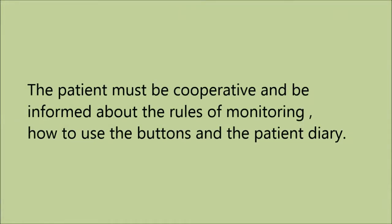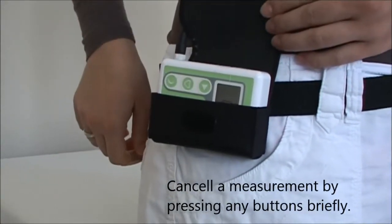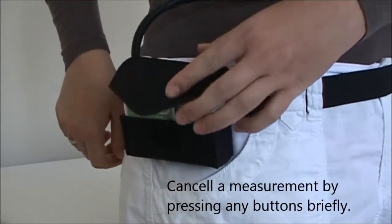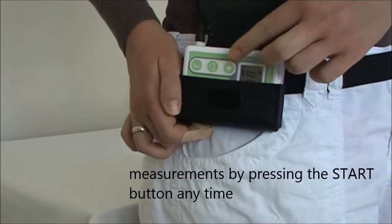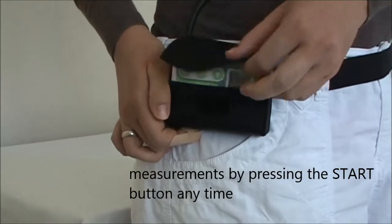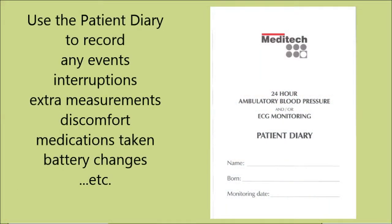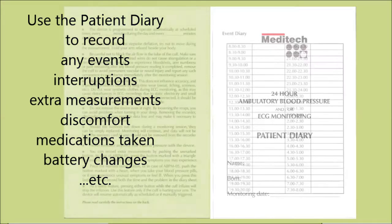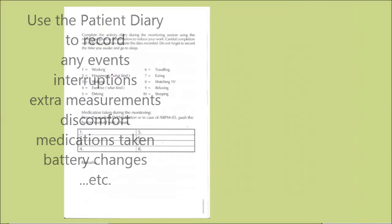The patient must be informed about the correct procedures during the monitoring, including using the patient diary. It is important that the patient knows how to cancel a measurement or initiate an extra measurement if needed. Apart from the patient diary, the device also has a journal feature which automatically stores recordings of events.